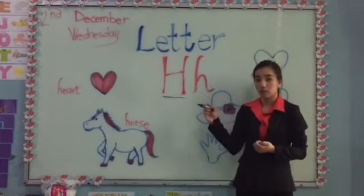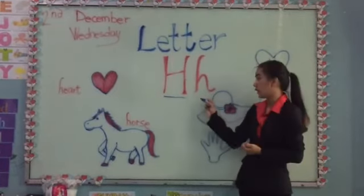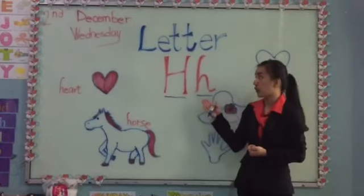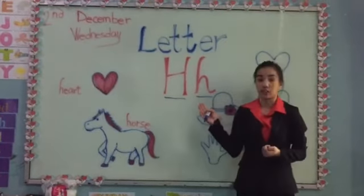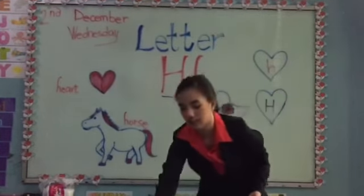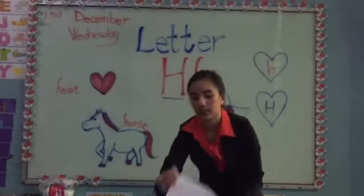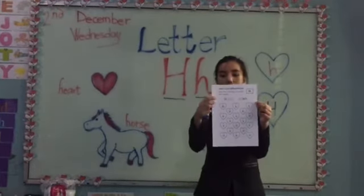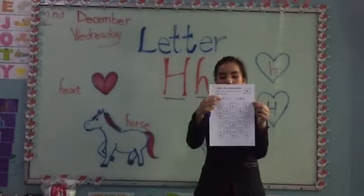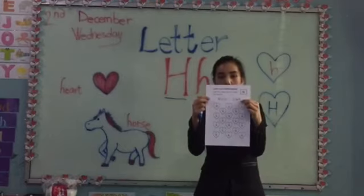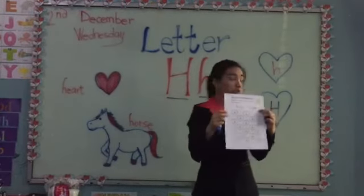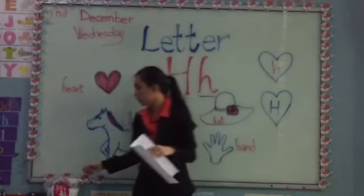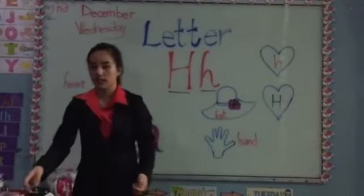This is the big letter H, and then we have your small letter H. That's letter H. Now in your activity, you can see this in your paper. We have the big letter H and the small letter H.